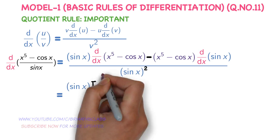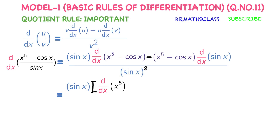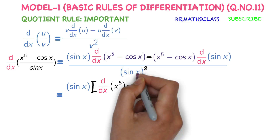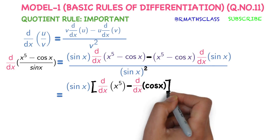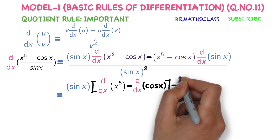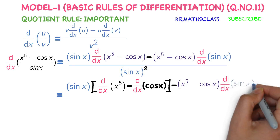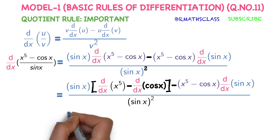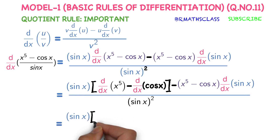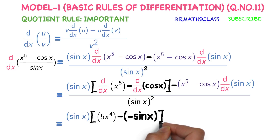How do we differentiate this expression? We will differentiate each and every function. Derivative of x⁵ minus derivative of cos x, minus x⁵ minus cos x, times derivative of sin x. Sin x times: derivative of x⁵ is 5x⁴, minus derivative of cos x is minus sin x, minus x⁵ minus cos x times derivative of sin x.